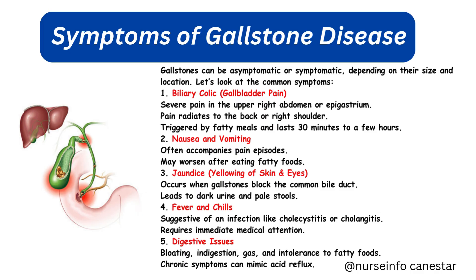Third, jaundice — yellowing of skin and eyes — occurs when gallstones block the common bile duct, leading to dark urine and pale stools. Fourth, fever and chills are suggestive of an infection like cholecystitis or cholangitis and require immediate medical attention. Fifth, digestive issues including bloating, indigestion, gas, and intolerance to fatty foods; chronic symptoms can mimic acid reflux.